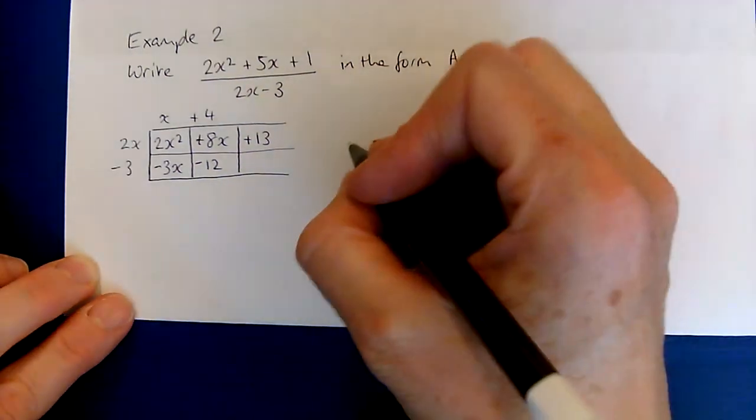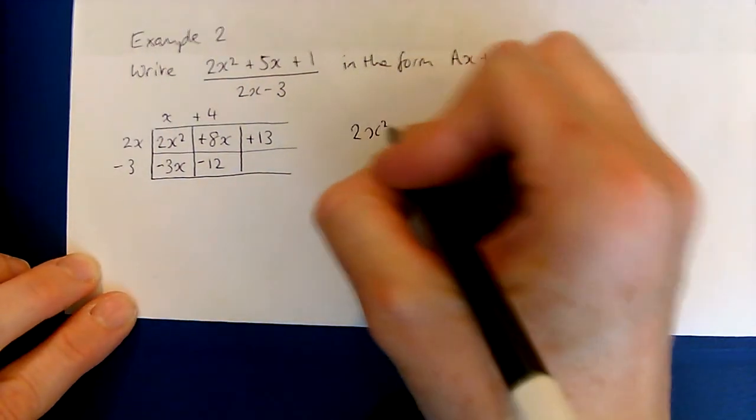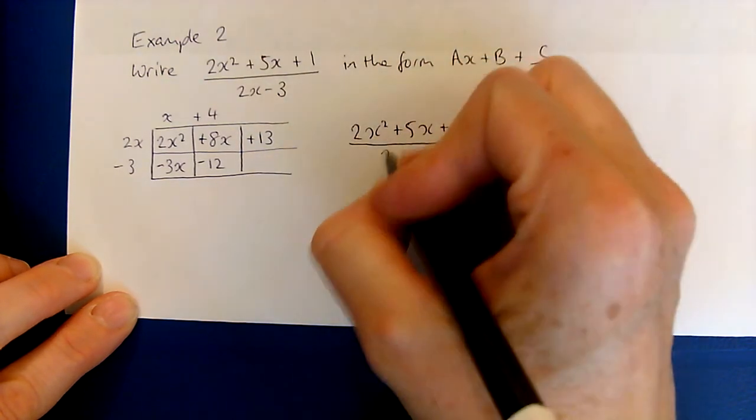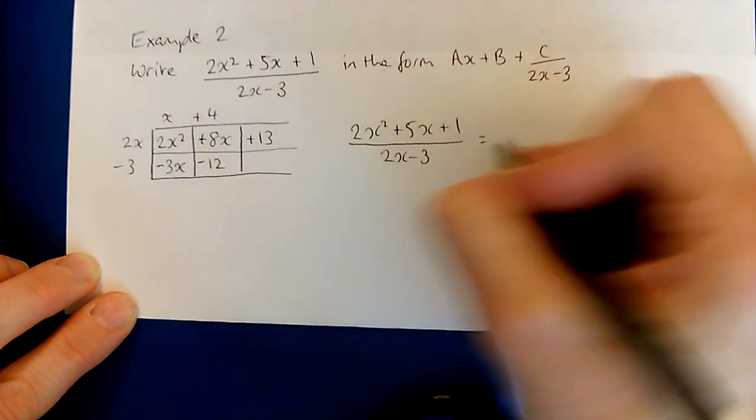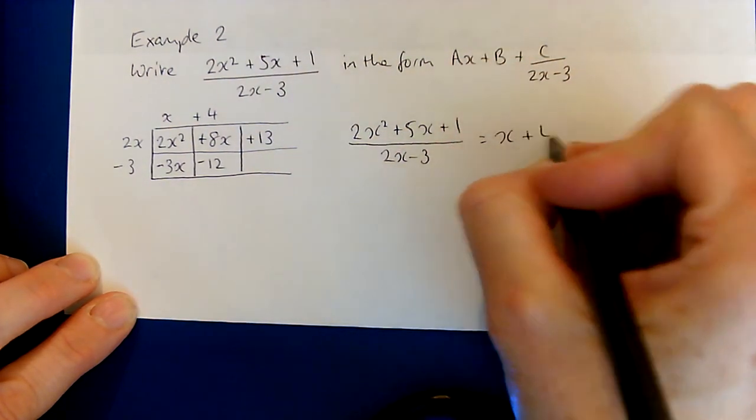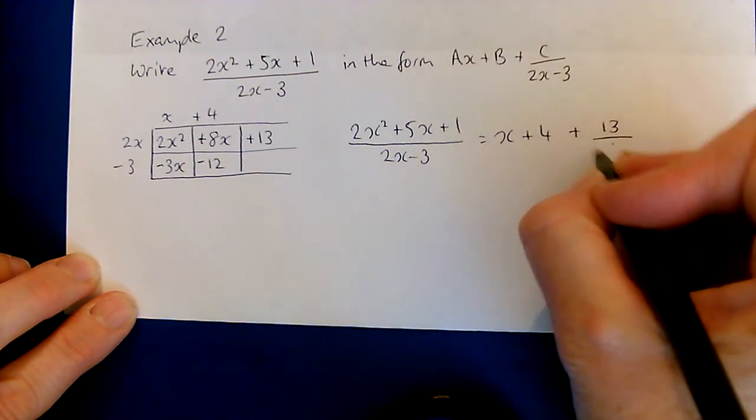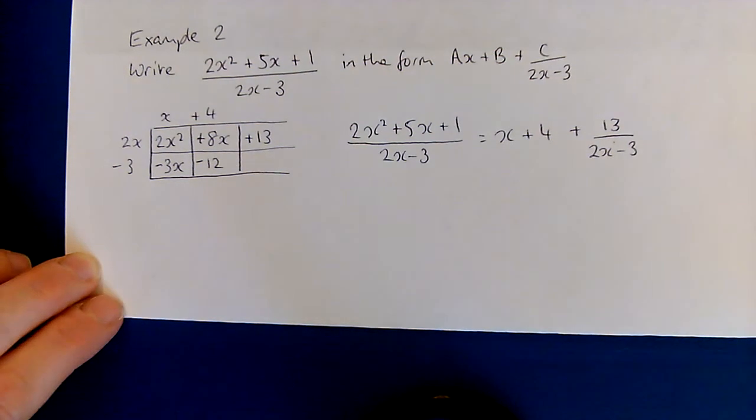So that means that we get 2x squared plus 5x plus 1 divided by 2x minus 3 will give us x plus 4 plus we have a spare 13 out of 2x minus 3 left over.